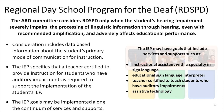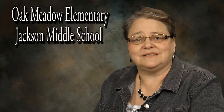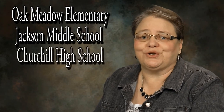The Regional Day School Program may be considered by the ARD only when the student's hearing loss severely impairs the processing of linguistic information through hearing, even with recommended amplification, and adversely affects educational performance. The ARD also considers data about the student's primary mode of communication. IEP goals indicate that a teacher certified to instruct students who have auditory impairments is required for implementation. The Regional Day School Program is staffed with individuals who have specialized skills. In Northeast ISD, there are three campuses identified to house the program: Oak Meadow serves elementary-age students, Jackson Middle School supports 6th, 7th, and 8th graders, and Churchill currently serves students in high school.